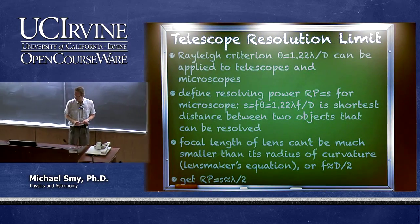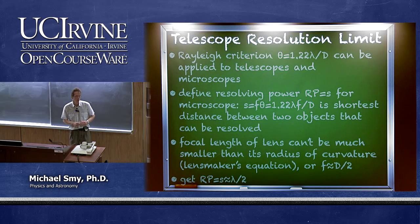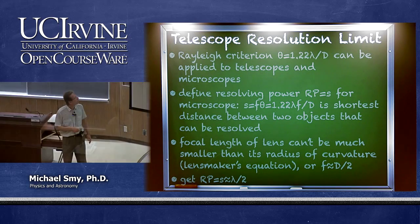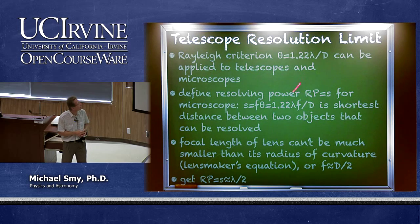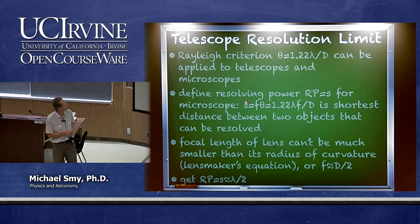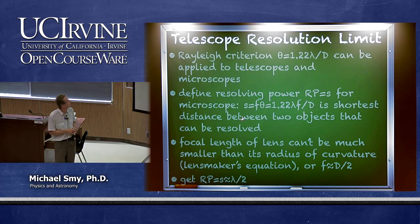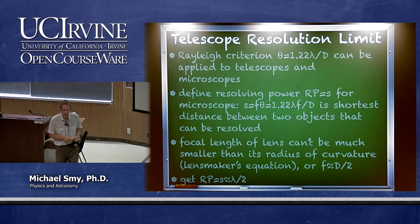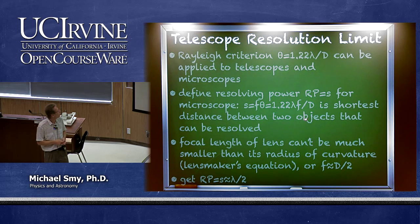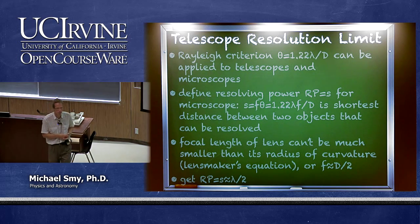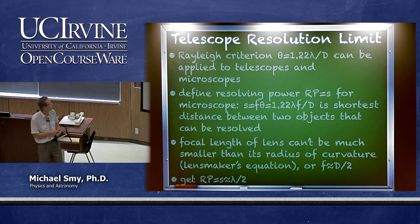We can apply this criterion to telescopes or microscopes. We define, in the case of a microscope, the resolving power S, which is the angular separation from the Rayleigh criterion multiplied by the focal length — the shortest distance between two objects that can be resolved, assuming the object is roughly at infinity.